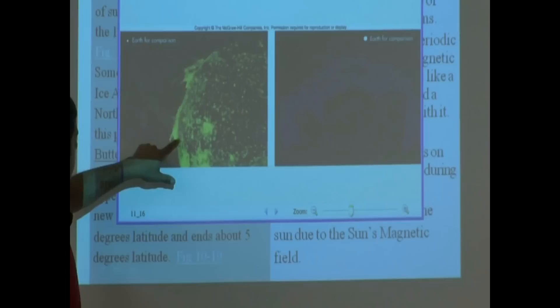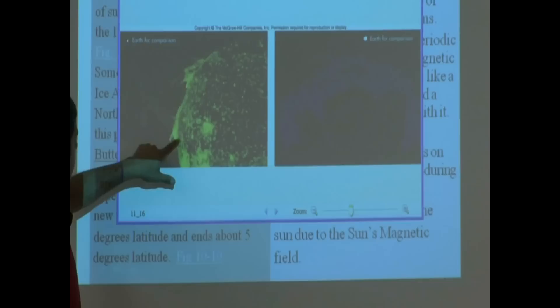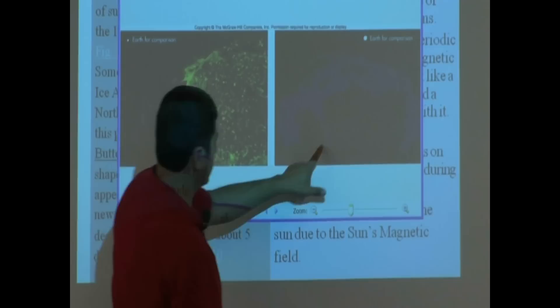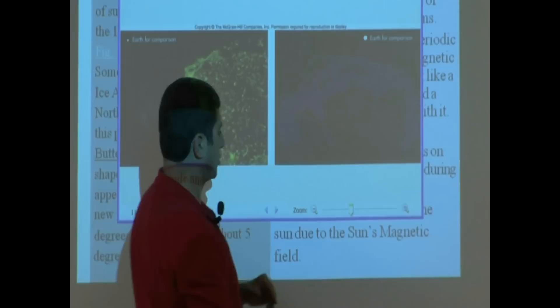So these prominences go like that. A lot of times they loop back. You see a prominence is coming out of here, then it goes back in. There's one here you can't really see too well. The prominence is going out, curving back in. And then this is the earth just to compare it. So these things are huge.